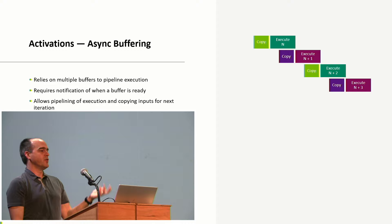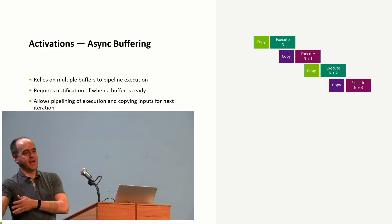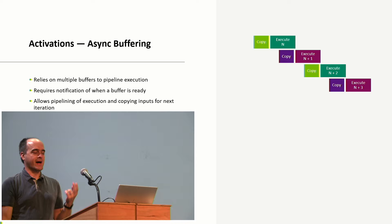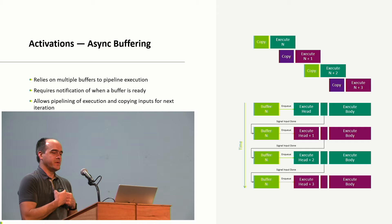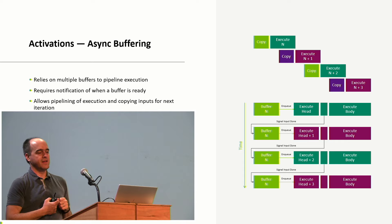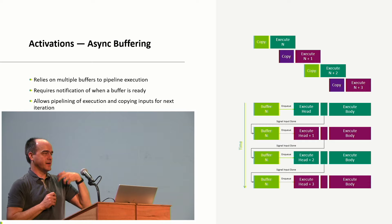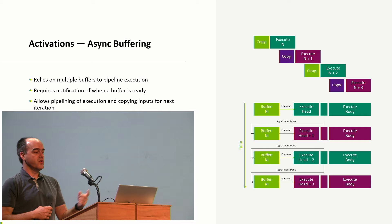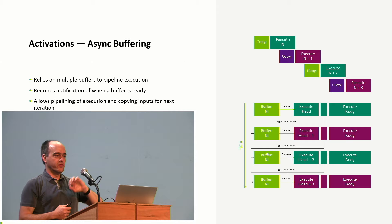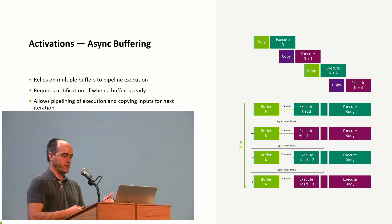One execution optimization is double buffering: while you're executing your network, you fill up the next buffer. The problem is this takes twice as much memory. In the neural network, you split the head into two parts — a head and a body. Once the head, which has all the connections to your inputs, is done executing, you signal back to the application to refill those pointers. This reduces the memory required for inference by half, going back to only using what you need.